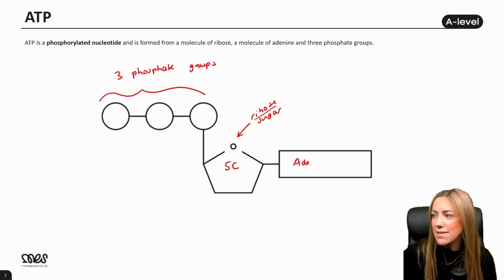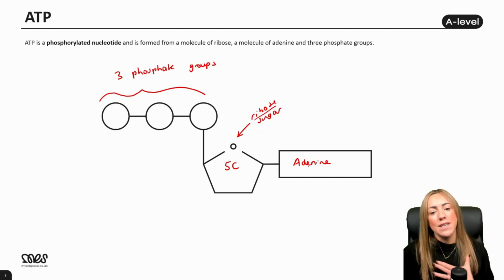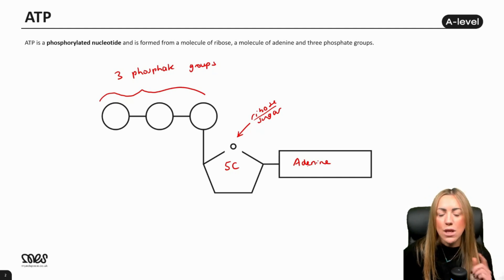This is adenine, which is a nitrogenous base, the same base found in DNA and RNA. But with ATP it is always adenine, there's no other option. That's the general structure. You simply have to draw the shapes like I've done here. We use three circles to represent the phosphate groups, the pentagon for ribose sugar, and a rectangular shape for the adenine base.